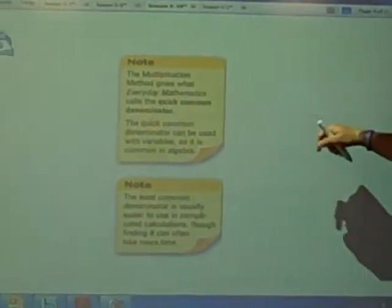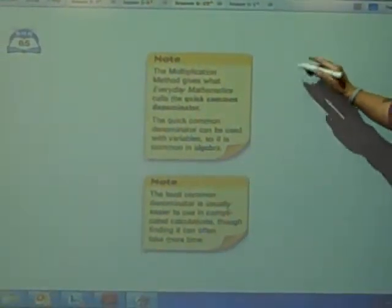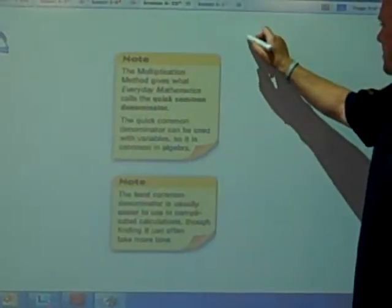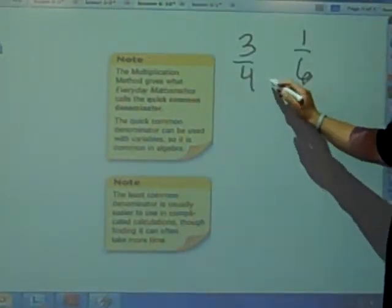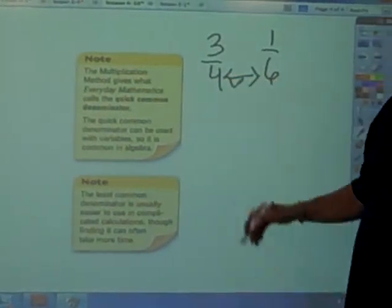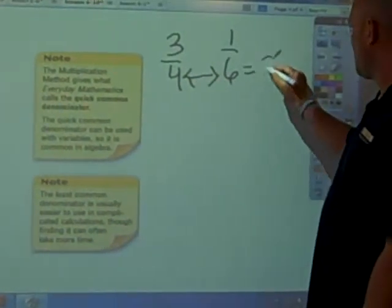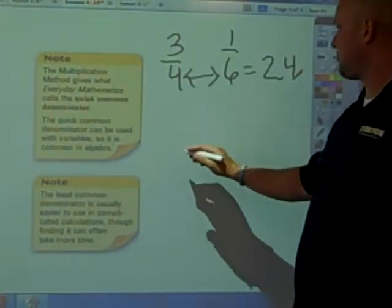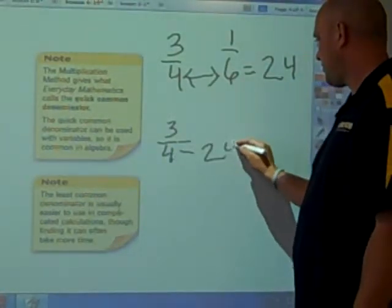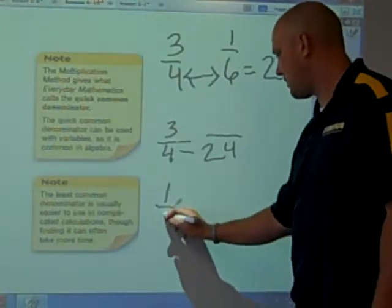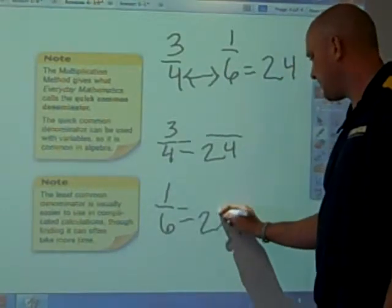And then the last way is the quick common denominator. And that's where you would take your, say, 3 fourths and 1 sixth, and you would simply multiply those two numbers. Your denominators, 6 and 4, is 24. So I know instantly that 3 fourths would equal something with 24, and 1 sixth would equal something with 24.